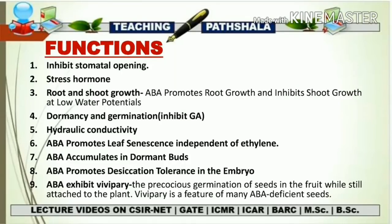The seventh point is that ABA accumulates in dormant buds. In woody species, dormancy is an important adaptation in cold climates. When a tree is exposed to very low temperature in winter, it protects its meristems with bud scales and temporarily stops bud growth. ABA was originally suggested as the dormancy-inducing hormone because it accumulates in dormant buds and decreases after tissue is exposed to low temperature.